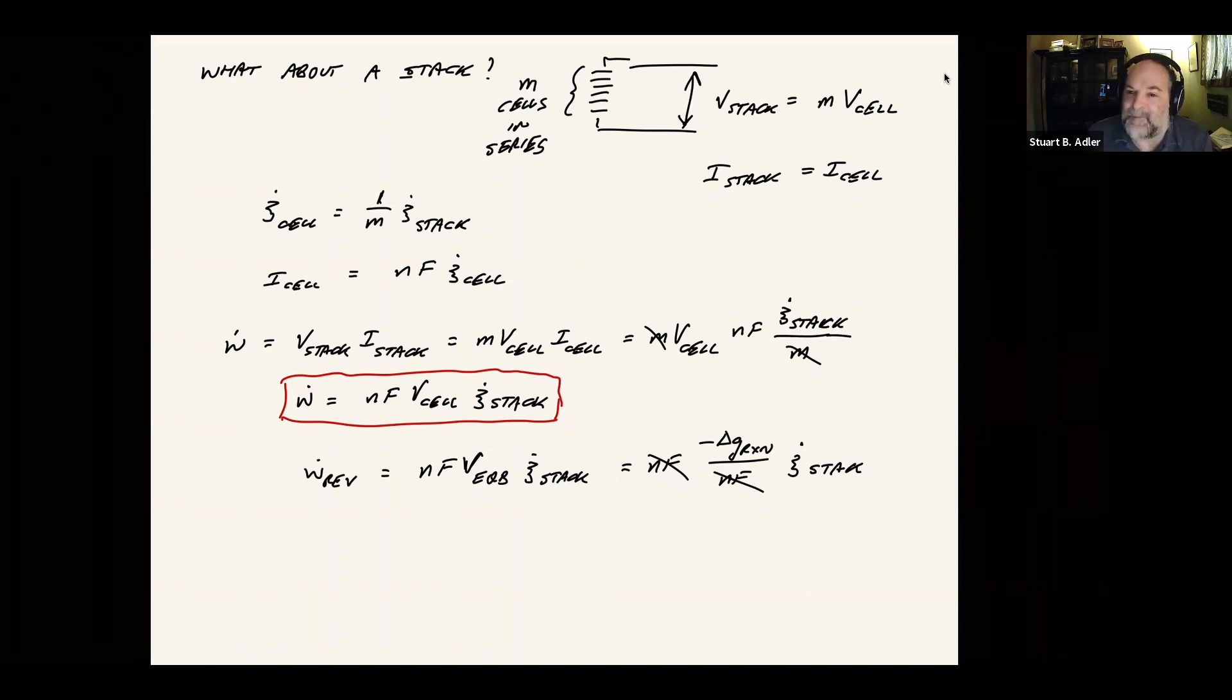So we've completely now bypassed all of the electrochemical considerations. We're just now thinking what goes in, what goes out. We're reacting a certain amount of fuel. We're doing that reaction reversibly. We should get X amount of work out of that. And that's what it's reflecting.